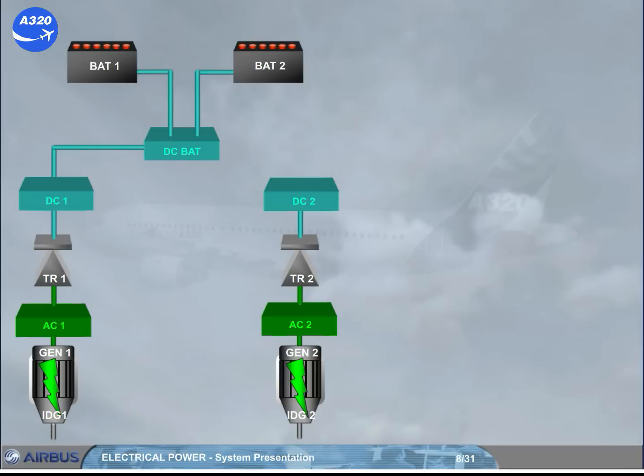The electrical system also includes two essential buses, the AC essential bus, normally fed by AC bus 1. Note, if AC bus 1 is lost, AC bus 2 automatically takes over. The DC essential bus is fed by DC bus 1 via DC bat bus.